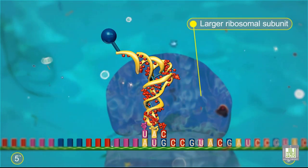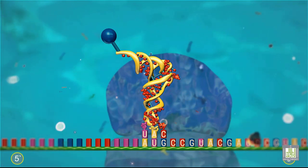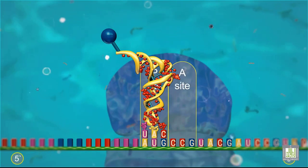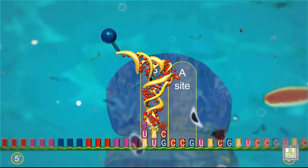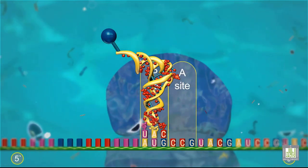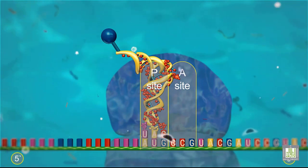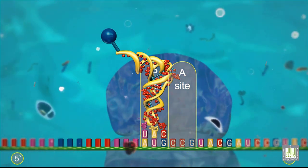Proteins called initiation factors are also involved, but are not shown. The 70S ribosome has two sites to which transfer RNA-carrying amino acids can bind. One is called the peptidal, or P-site, and the other is called the acceptor, or A-site.